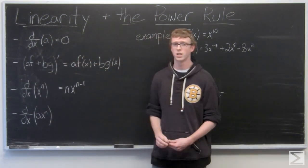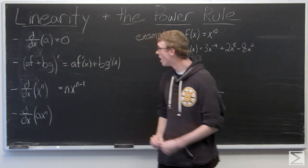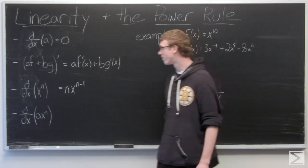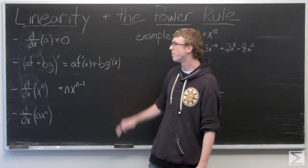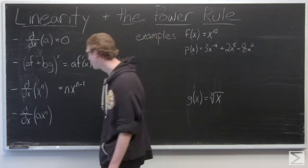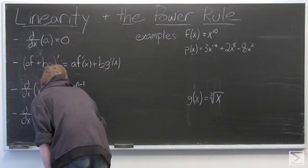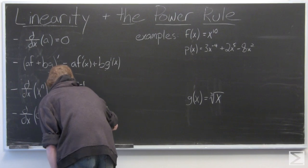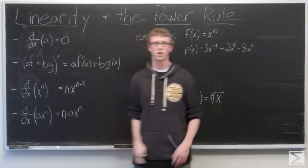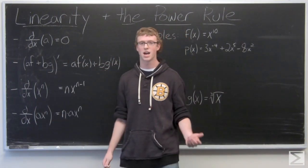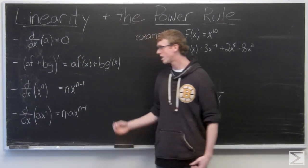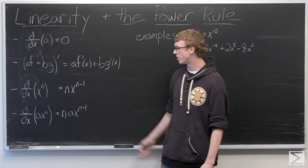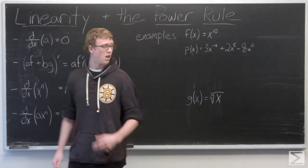And again, this is another rule that's going to come into play pretty much everywhere. At the bottom here I have a function ax to the n and we want the derivative of that, so we're kind of combining the linearity and power rule here. And this is simply going to be n times a times x to the n minus 1.